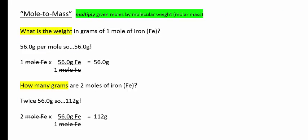So how many grams are two moles of iron? Well, if one mole was 56, two moles would be 112. And the calculation is two moles of Fe times the fraction 56 grams of iron per one mole of iron.